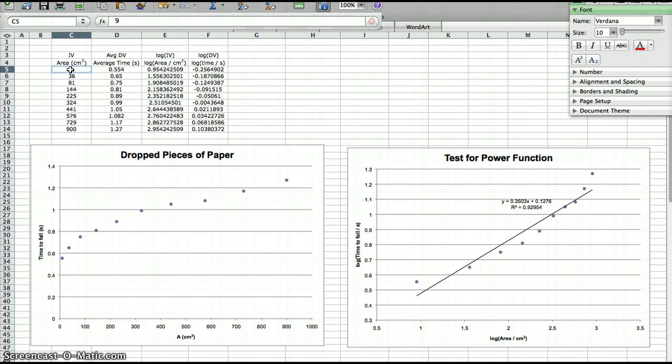For each surface area, there were 10 surface areas. That's the IV, the independent variable. And there were 10 values of the independent variable. I collected three values of the dependent variable at each area, and I averaged the three times together. So I was measuring how fast it takes for the paper to fall.